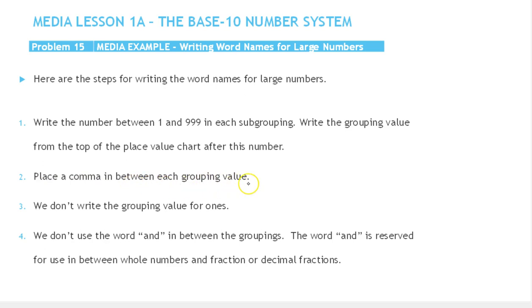We place a comma in between each subgrouping. We don't write the grouping value for ones, so when we get to 373, we're not going to say 373 ones—we just omit that.